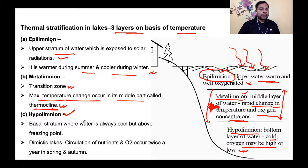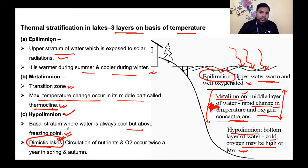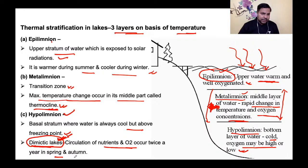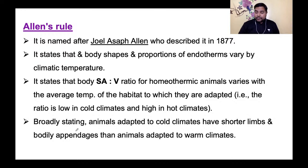Epilimnion: upper stratum of water, exposed to solar radiations, warmer during summer and cooler during winter। Metalimnion: transition zone between epilimnion and hypolimnion, maximum temperature change occurs in its middle part called thermocline। Hypolimnion: basal stratum where water is always cool but above freezing point। Dimictic lake: जिसमें nutrients और oxygen का circulation साल में दो बार होता है — एक बार spring में और एक बार autumn में।